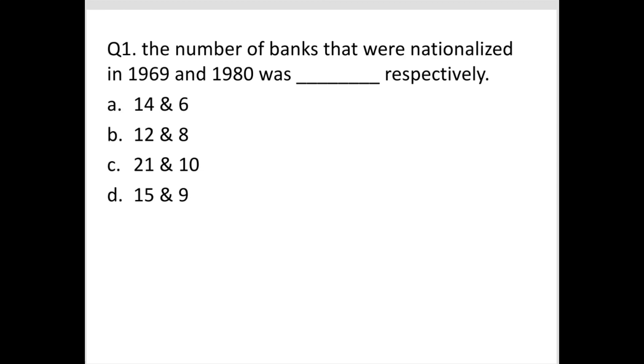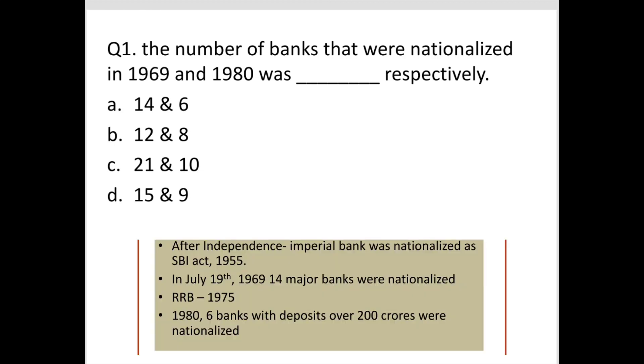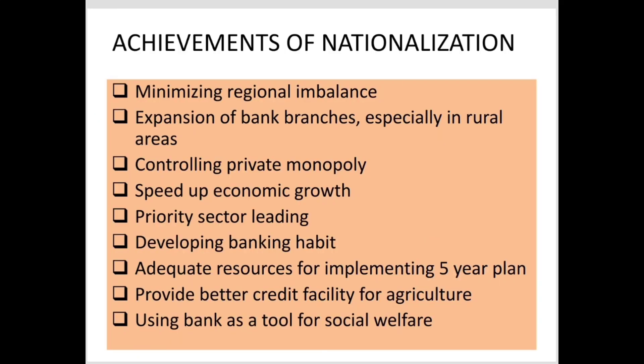So the number of banks nationalized in 1969 was 14 and in 1980 was 6, making a total of 20, reduced to 19 after the merger. The achievements of nationalization include implementing five-year plans, providing credit facilities for agriculture, and using banks as a tool of social welfare.